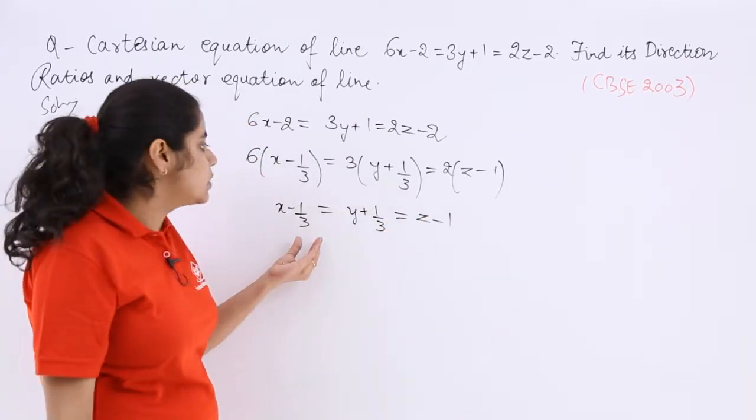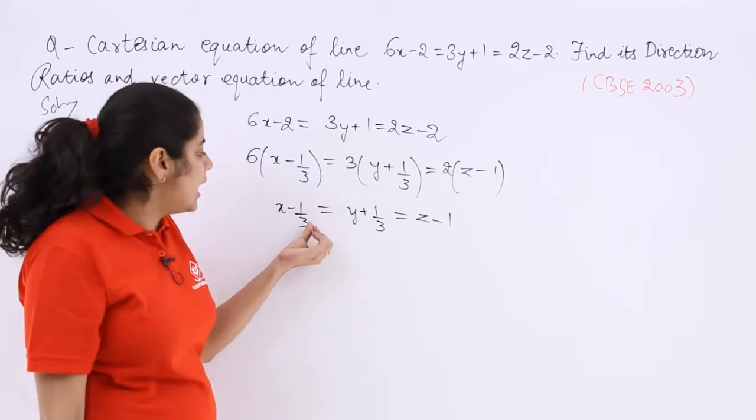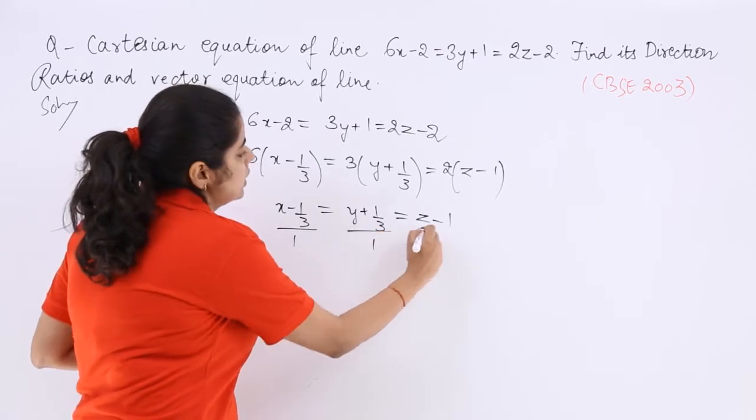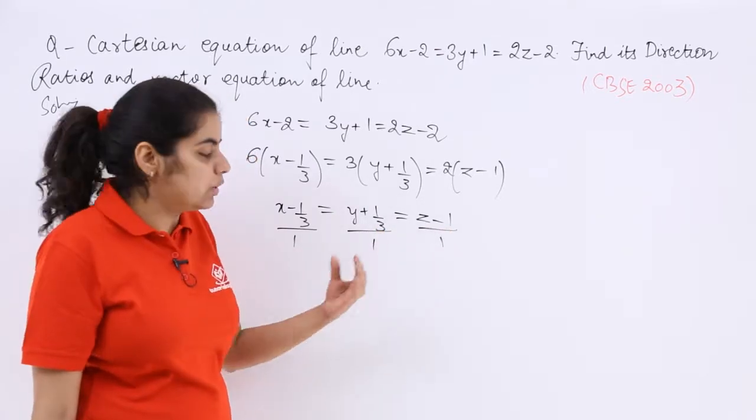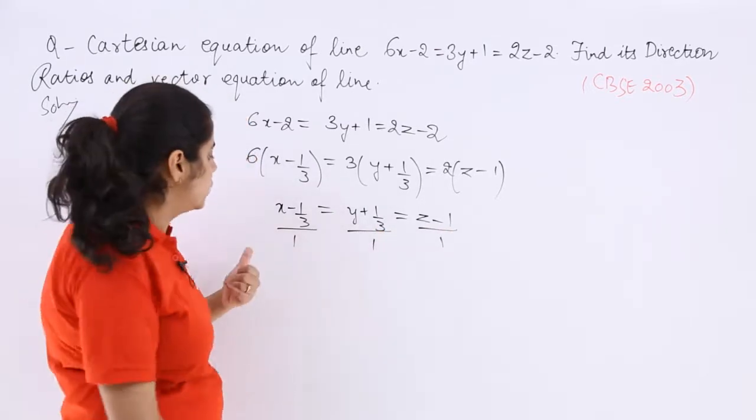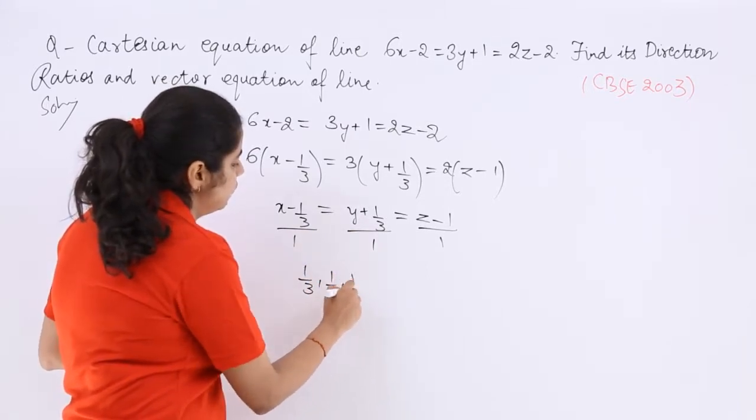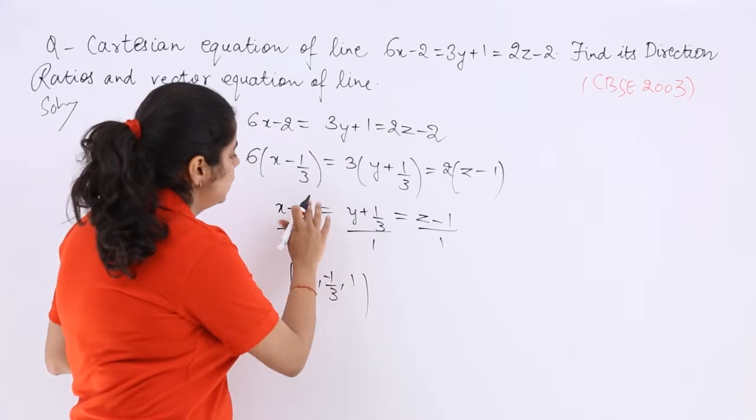That means you can straight away find out that your line passes through different points. Here it is in division, you can write 1. So you can see your line passes through 1 by 3, minus 1 by 3, and 1.